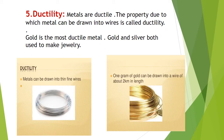Ductility: metals are ductile. Ductility is the property due to which metals can be drawn into wires. Gold is the most ductile metal. Gold and silver are both used to make jewelry because these can be drawn into long wires. One gram of gold can be drawn into a wire of about 2 km in length. We also see wires of copper, aluminum, and iron in daily use.